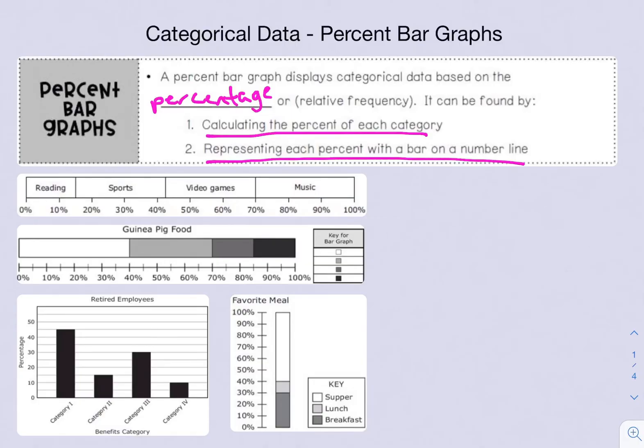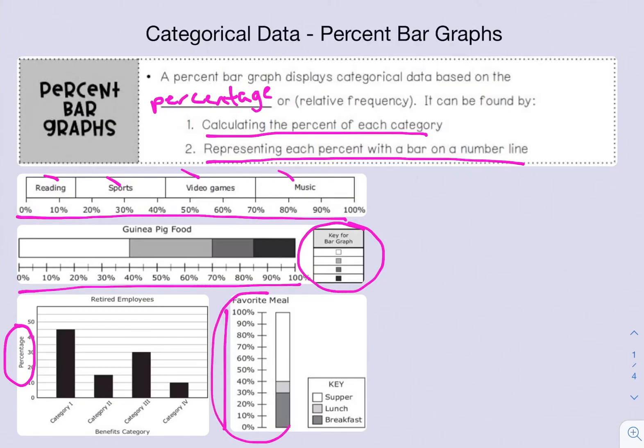We have a few different types that you may see. You see that each of them actually have a percent in some way. The first type may have the actual word shown on the percent bar graph representing each type, or it may have a key and be color-coded. It could be a vertical percent bar graph or it could have actual bars on the bar graph.